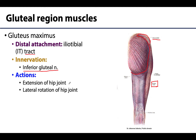The gluteus maximus will be the main extensor of the hip joint — the most powerful or strongest extensor of the hip joint. But it really only is active in cases where you need more forceful extension, such as when you're rising from a seated position or jumping. It's not really playing as much of a role when you're just standing. It will also play an important role in lateral rotation of the hip.